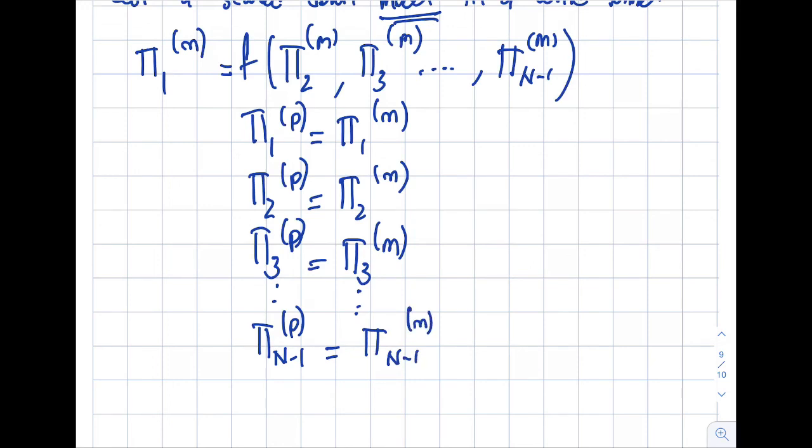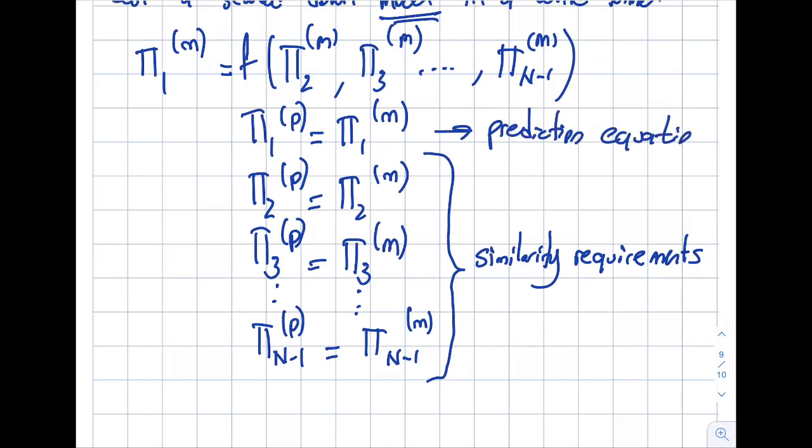So if you follow the instructions that I've set forward, which is to pick the left hand side parameter as a part of the first pi term, then this will be called similarity requirements. So these all, so pi 2, pi 3, and all the rest up to pi n minus 1, is called the similarity requirements. So these relationships establish the geometric similarity, kinematic similarity, and dynamic similarity for me. And the first equation is called the prediction equation. Because again, if you follow the approach that we take, the left hand side parameter only appears on pi 1, so that this is really what I'm really interested in.